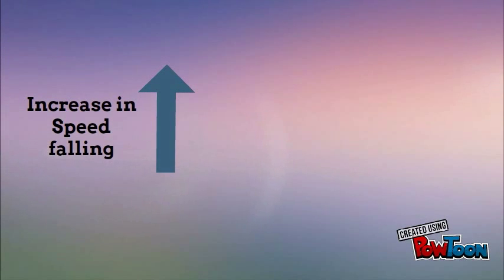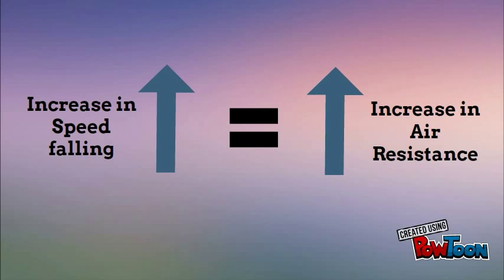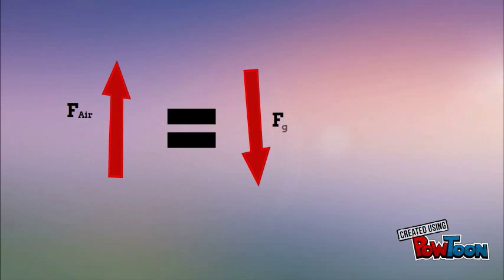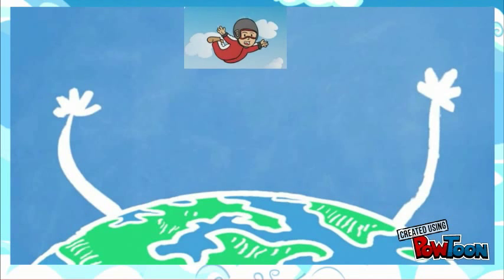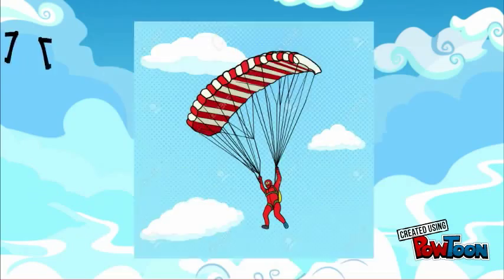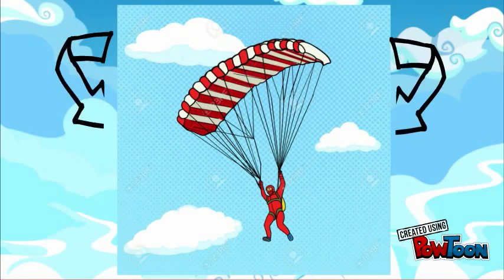The faster you fall, the more air resistance is caused, and eventually the upward force of air resistance will equal the downward force of gravity and you will be falling at a constant speed. But you are still falling to your death, as there is not enough air resistance to slow you down to a safe speed, so we use a parachute to achieve this.